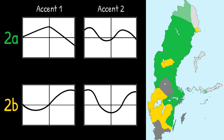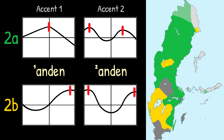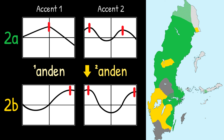As for type 2a and 2b, the difference is basically the same, although for Accent 2, the timing mainly concerns the second peak in pitch. Let's listen: 'andan', 'andan', 'andan', 'andan'.